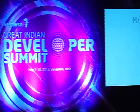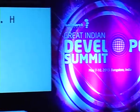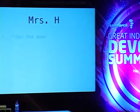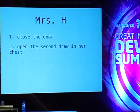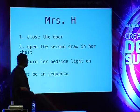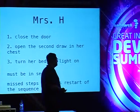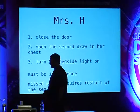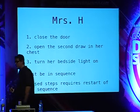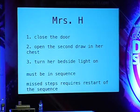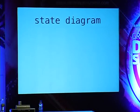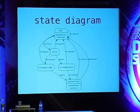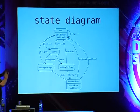Let's say we have a specific client, Mrs. H, and here is the formula for her secret compartment. You close the bedroom door, open the second drawer in her chest, and turn the bedside light on. These have to be in sequence, and if you miss any steps, you have to restart the sequence from the beginning. We know exactly what this is from a computer science standpoint — this is really nothing more than a state machine. You have a particular state, it has transitions to new states, and we can easily model this in code as a state machine.